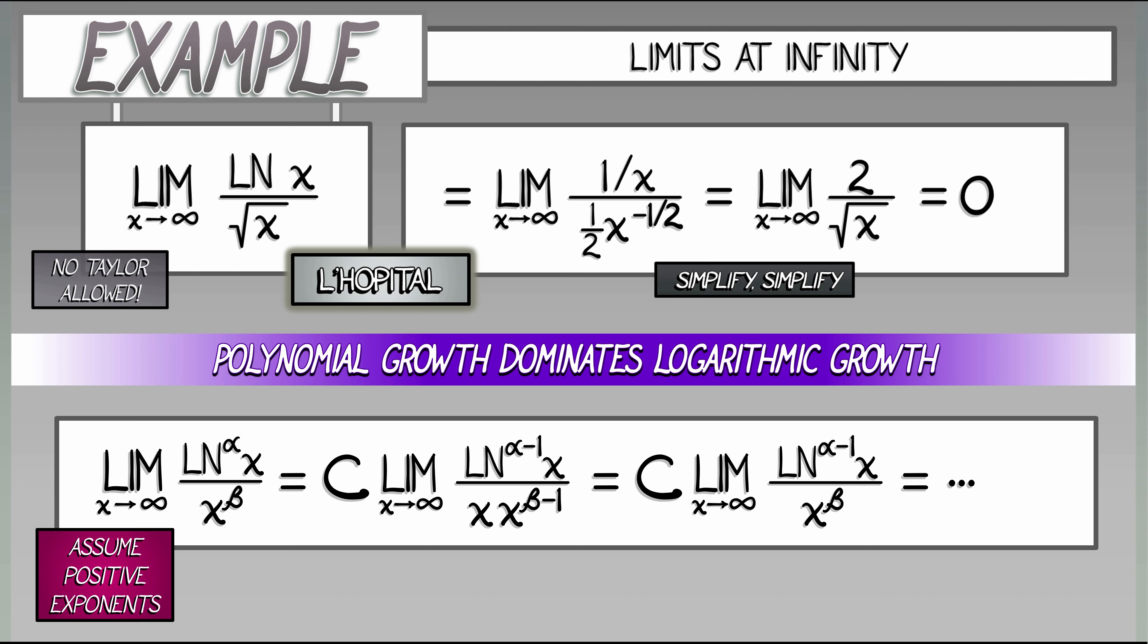we keep differentiating until we've exhausted all those powers of log of x in the end leading to a numerator that goes either to a constant or to zero, whereas the denominator is going to infinity. That means the limit of the ratio is zero. That means polynomial growth always dominates logarithmic growth, independent of what constants we're using.